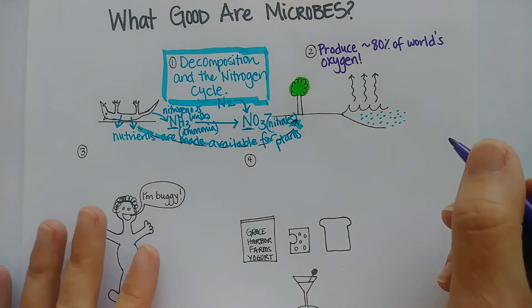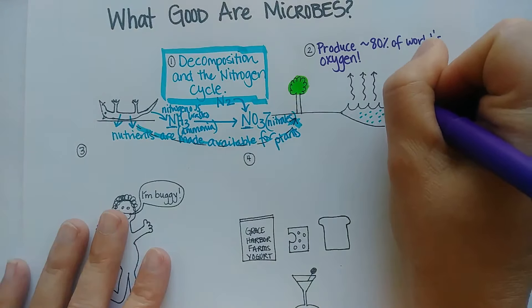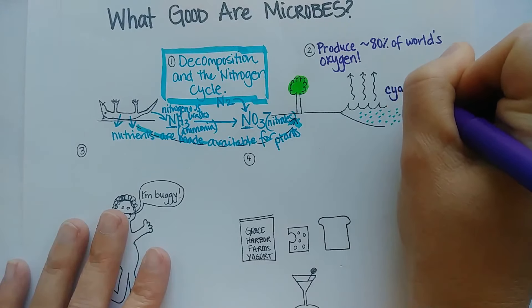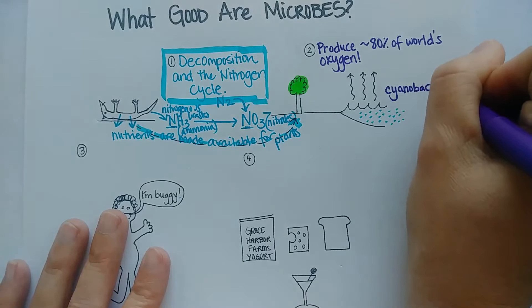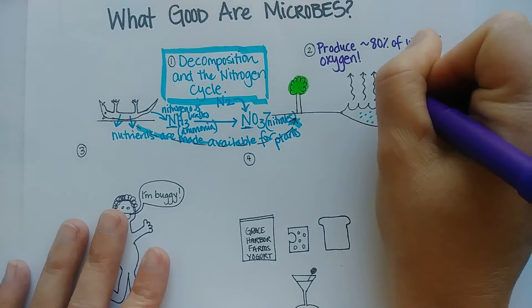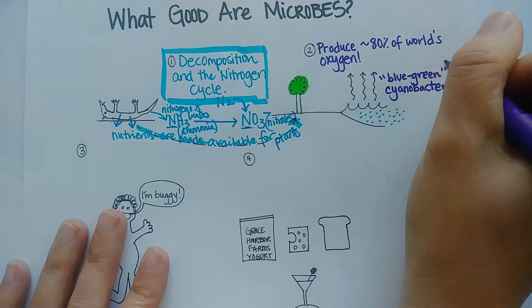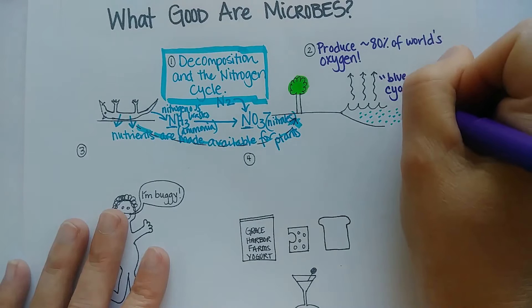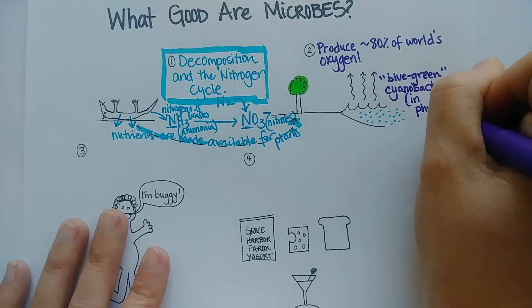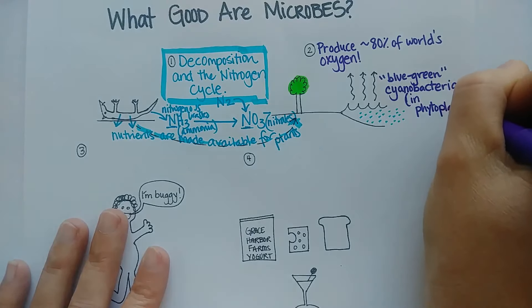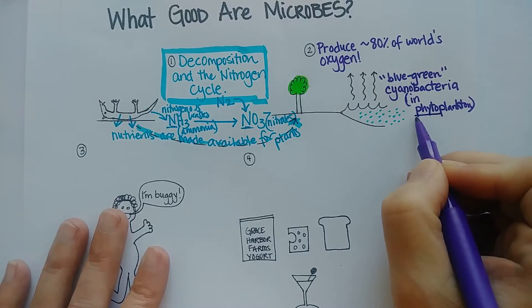These phytoplankton are mostly what we call cyanobacteria. That root word cyano means blue-green. So these bacteria are in what we call phytoplankton—plankton are microbes that live in the ocean, and phytoplankton are ones that are photosynthetic.